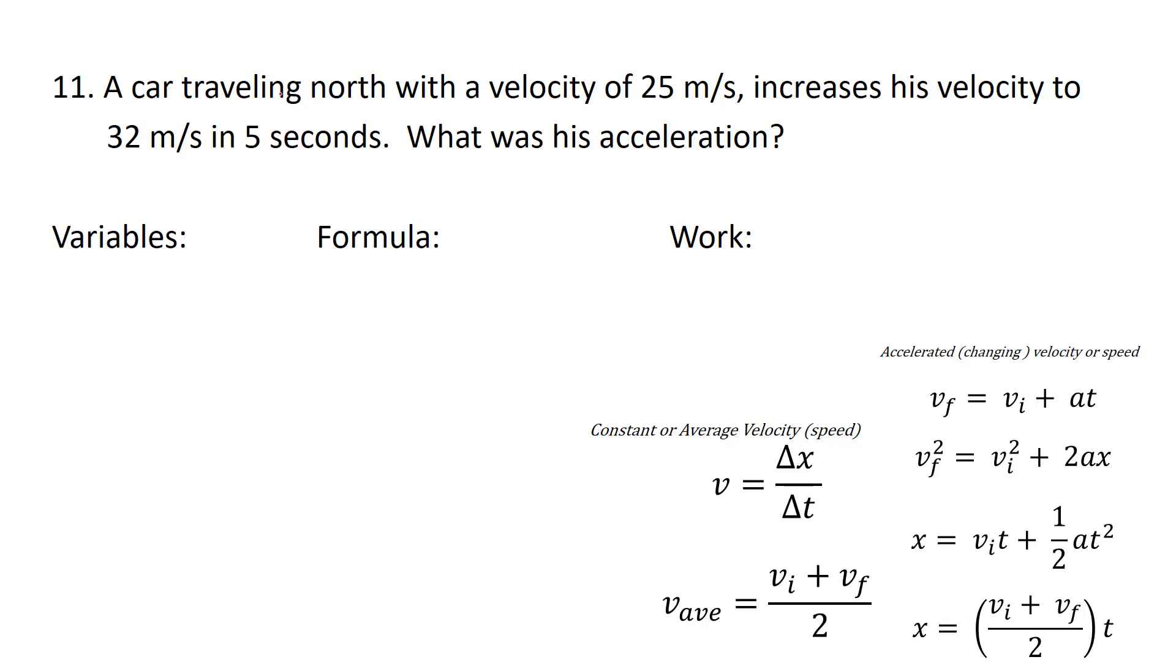Next, a car traveling north with a velocity of 25 meters per second increases its velocity to 32 meters per second in 5 seconds. What was his acceleration? So VI, it starts at 25 meters per second. It gets to a final velocity of 32 meters per second. The time it takes is 5 seconds, and the question is, what is the acceleration?